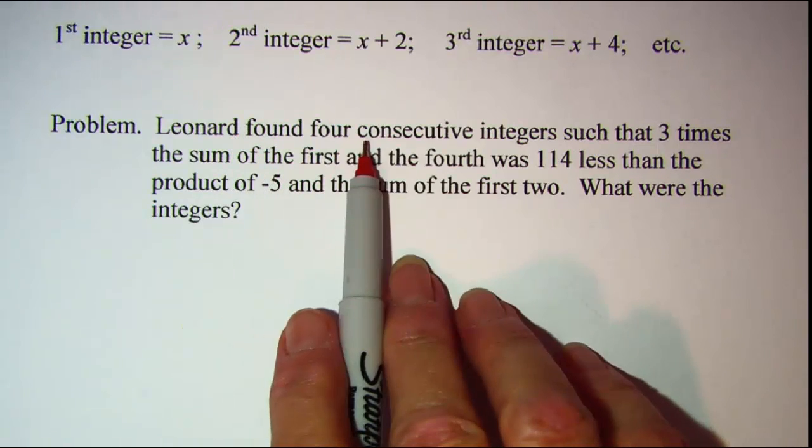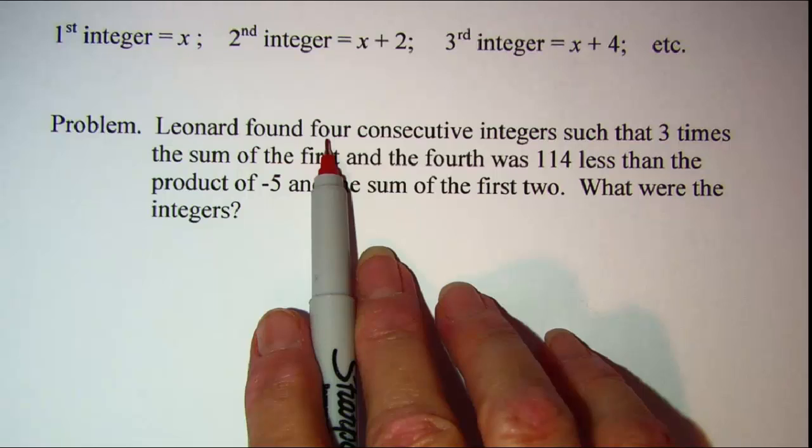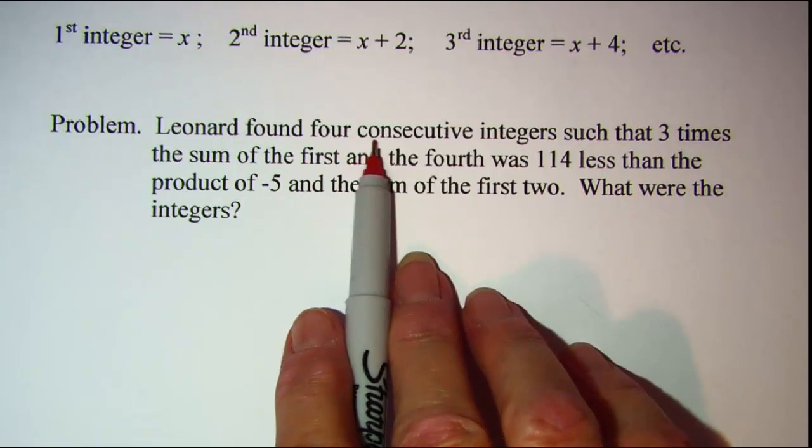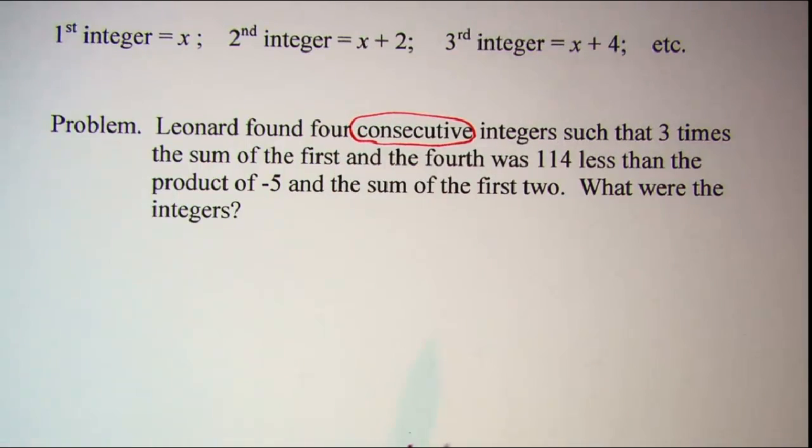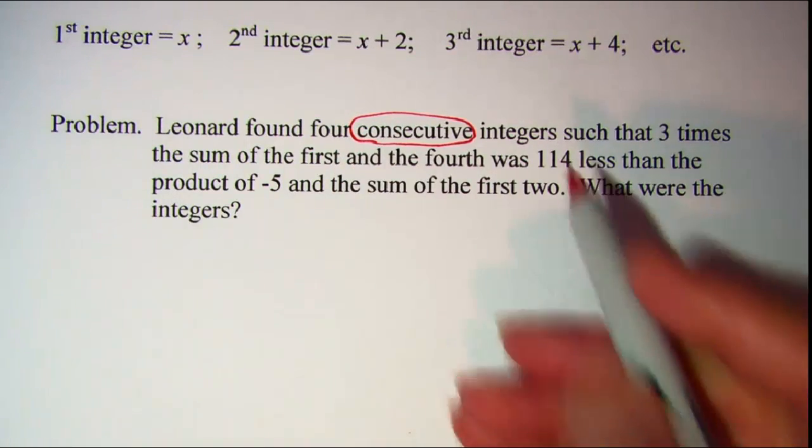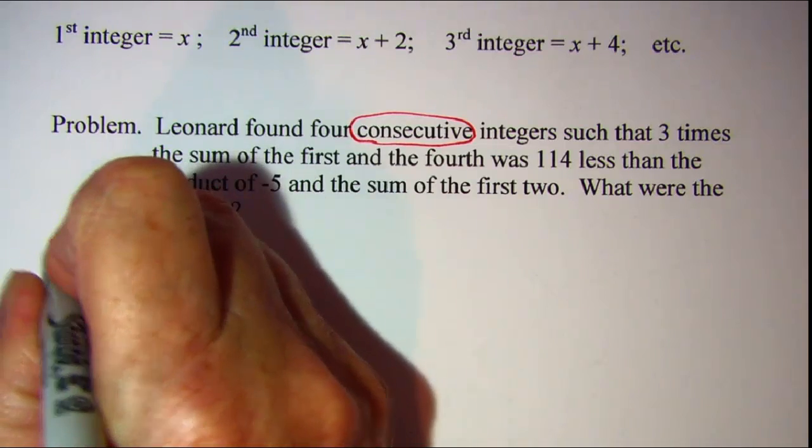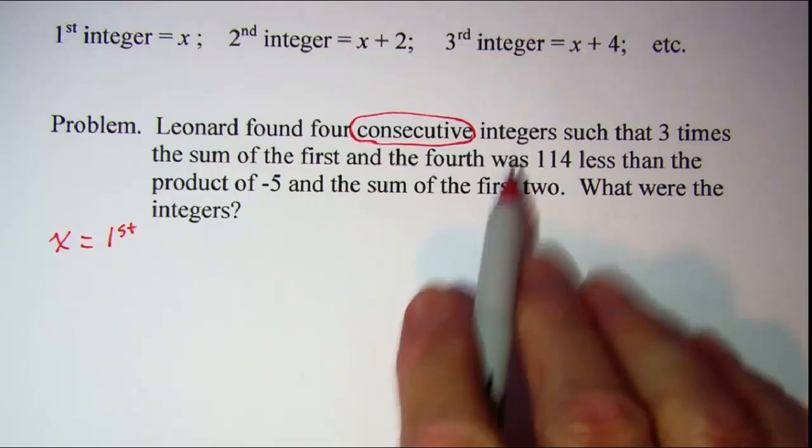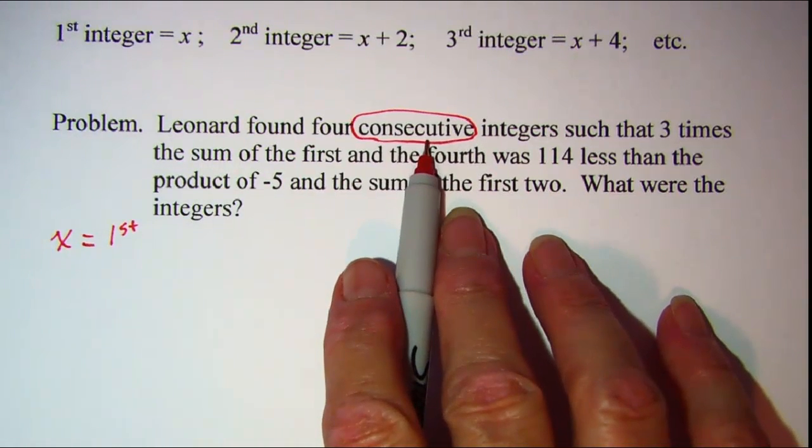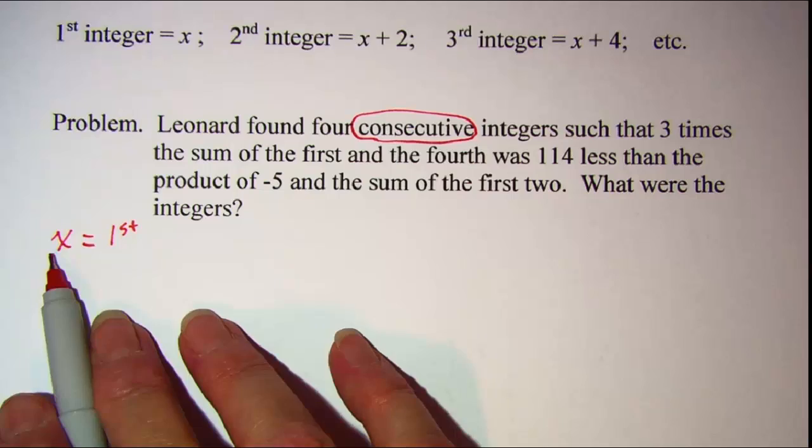So the first thing we see is that we need four numbers and we're just dealing with consecutive integers. We're not talking about even or odd. So always let x be your first and then since they're just consecutive integers we'll add one onto this each time.